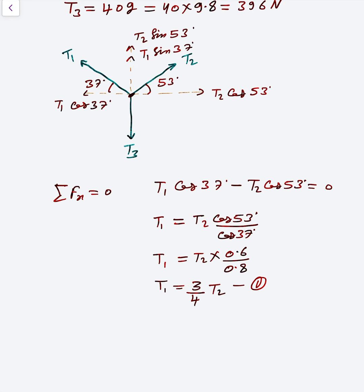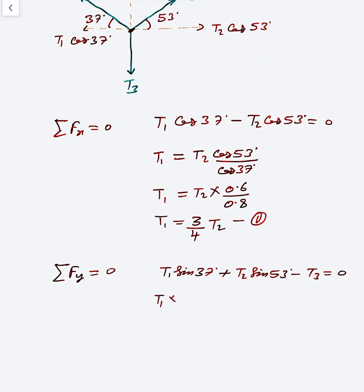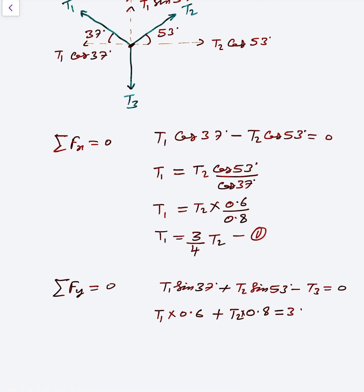And now F_y equals zero, sum of F_y. So T1·sin37° plus T2·sin53° minus T3 equals zero. So T1 × 0.6 plus T2 × 0.8 equals T3, and T3 is 396 Newtons.